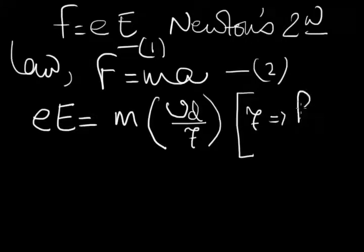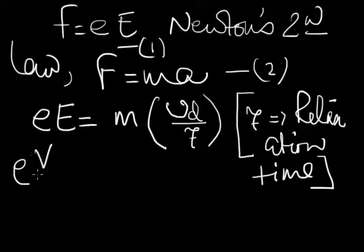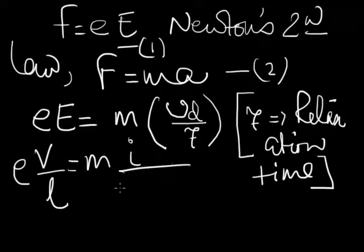You have to remember the name relaxation time means the time interval between two collisions of electrons. Now if I apply the value of capital E which is V/L, and if I apply the value of drift velocity which we have already deduced, then I get this kind of equation.